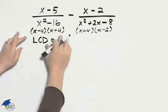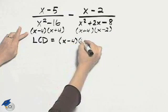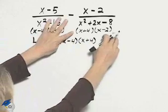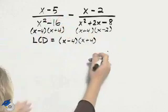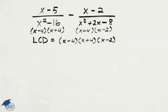So our least common denominator will contain these factors from the first denominator, x minus 4, x plus 4. It will also contain these factors. Now we already have x plus 4, so we don't want to write it again. So our LCD is those three factors.